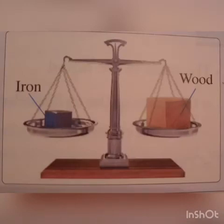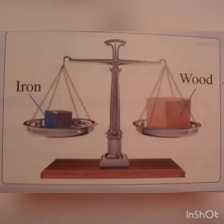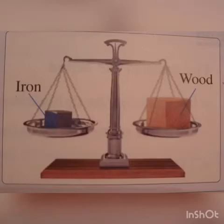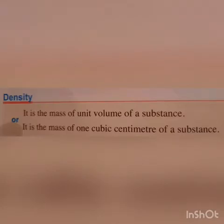In the second figure, the balance is equal, so the two cubes have the same masses. But as you see, the cube of iron and the cube of wood have different volumes. So equal masses of different substances have different volumes.